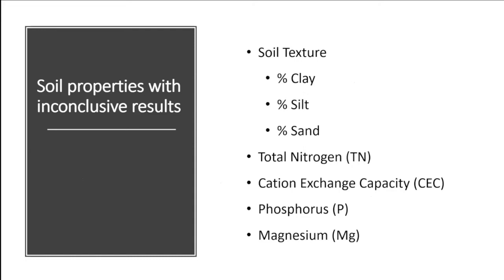Some parameters didn't have a lot of conclusive results: soil texture showed some mixing but nothing fell out; total nitrogen; cation exchange capacity, which is tied greatly with organic matter and clay content; phosphorus; and magnesium. In native rangelands, using fertility as a tool is not an option — we know that, and you're going to get weeds. Some dilution of the topsoil may actually keep some weeds down, but it might also keep some desirable species from being able to establish.